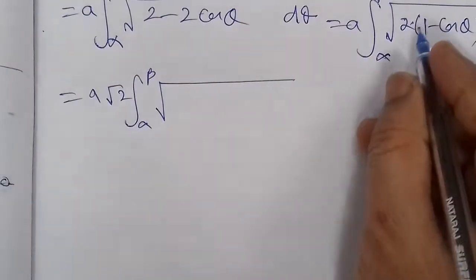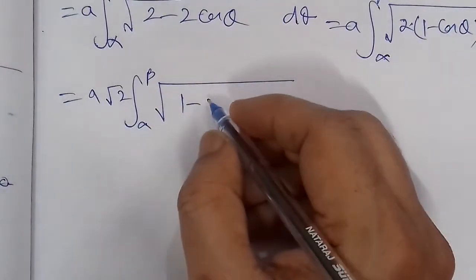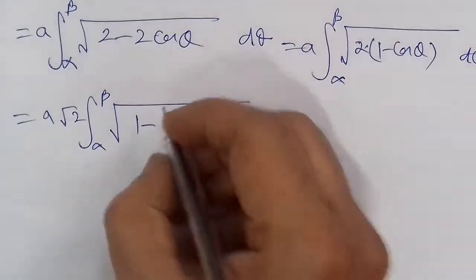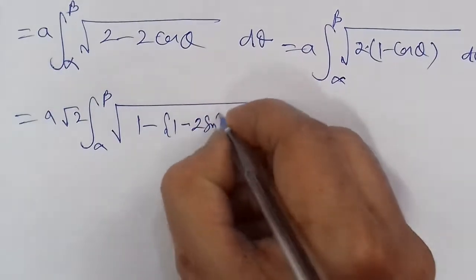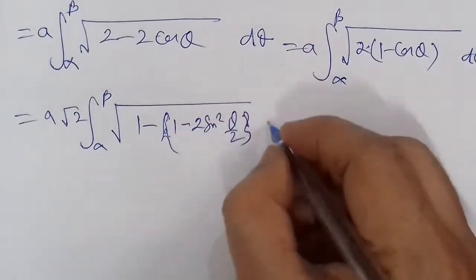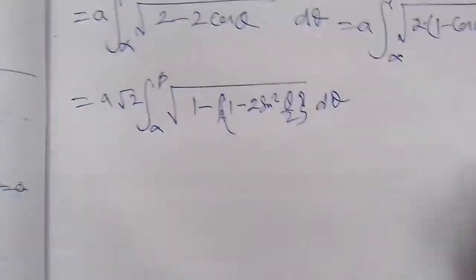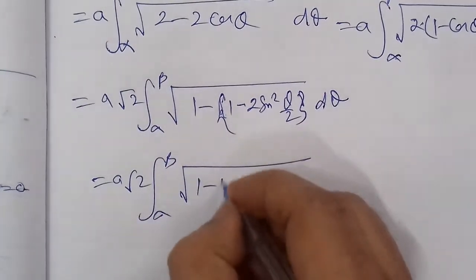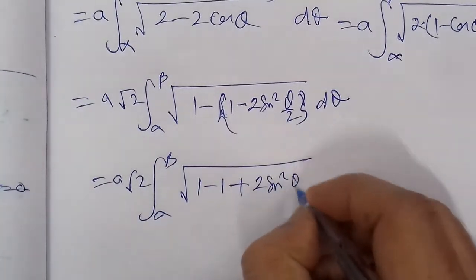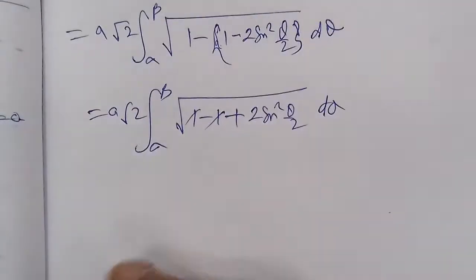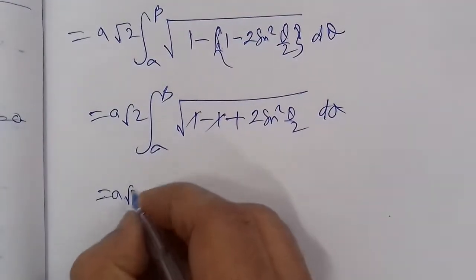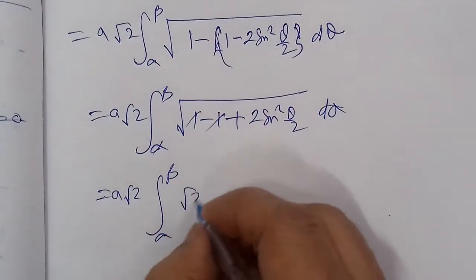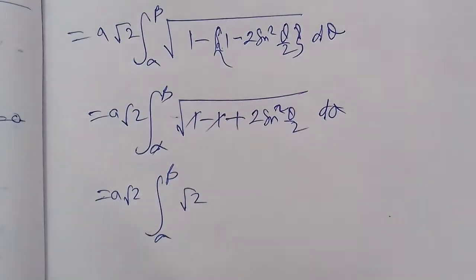= a√2 integral α to β square root [1 - cos θ] dθ. Breaking this using the formula: 1 - cos θ = 2sin²(θ/2). So this becomes = a√2 integral α to β square root of 2sin²(θ/2) dθ